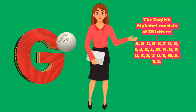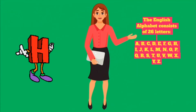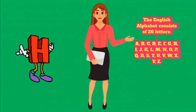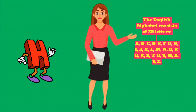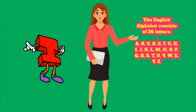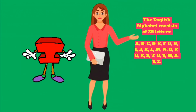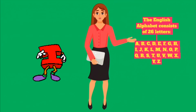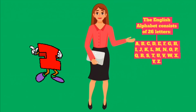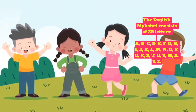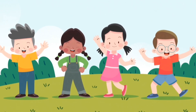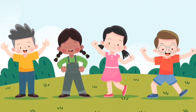A, B, C, D, E, F, G, H, I, J, K, L, M, N, O, P, Q, R, S, T, U, V, W, X, Y, Z. What is the difference between pronouncing vowels and consonants?